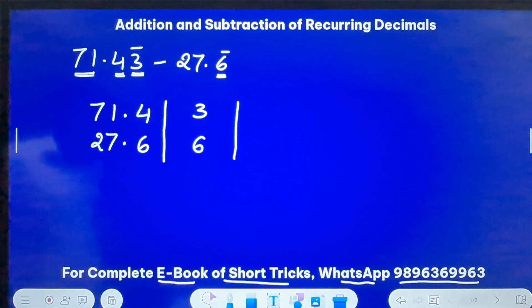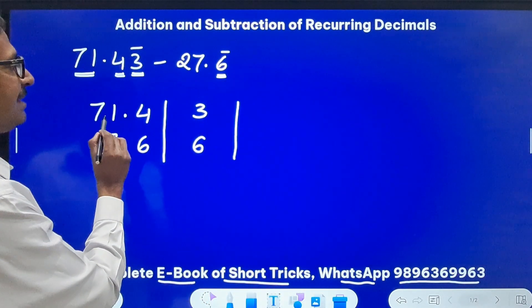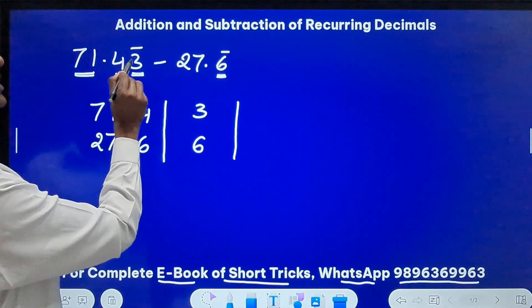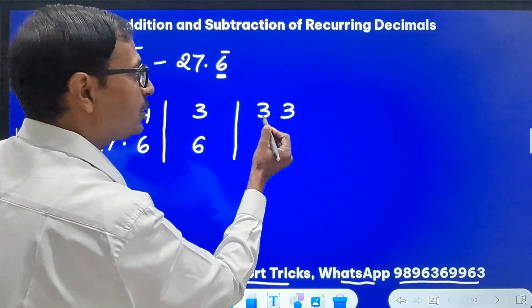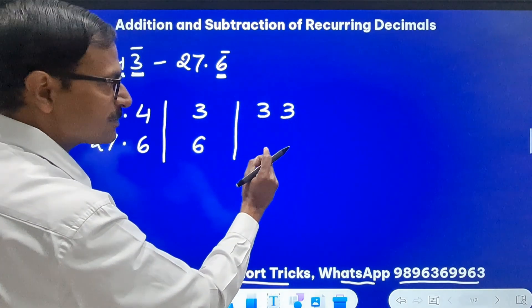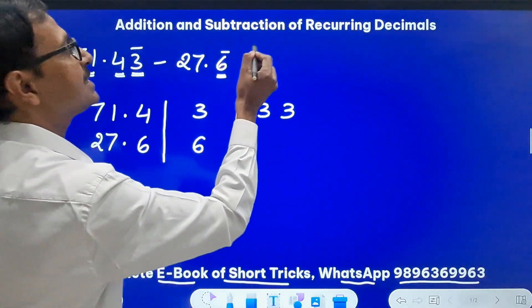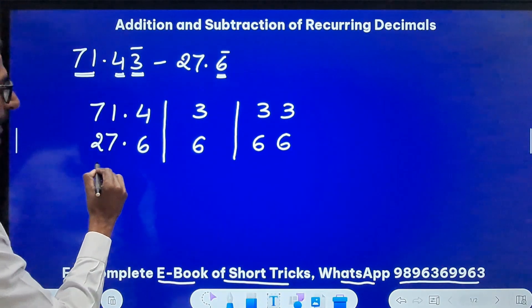In the last part I have to write two digits by default. So 71.43, what is the number? 71.43333. So up to 3 I have written, so I will write two more 3s here. I have to write two digits by default in the last part. And here 27.666666 repeats itself, so I will write 66 here.